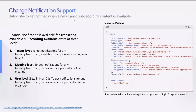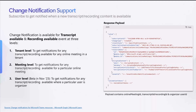In terms of change notifications, this is a really important part because it allows the app to understand when the transcript and recording content is available for download. We support change notifications for transcript available and recording available events, and we support it at two levels currently. One is the tenant level, where subscribing to a tenant-level notification means you'll get notified whenever a transcript or recording is available for an online meeting happening in that tenant. At a meeting level, you'll only be notified when the transcript or recording is available for a particular meeting. We are also working on a user-level notification that will soon be available in beta, where you could get notifications for a particular user where the user is the organizer. And here, this is typically how the response payload would look like.